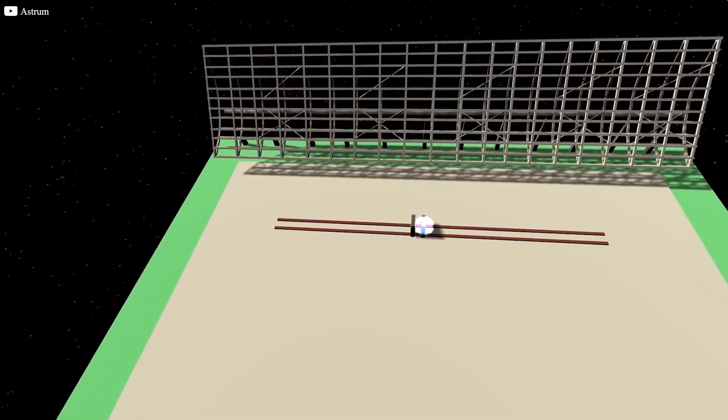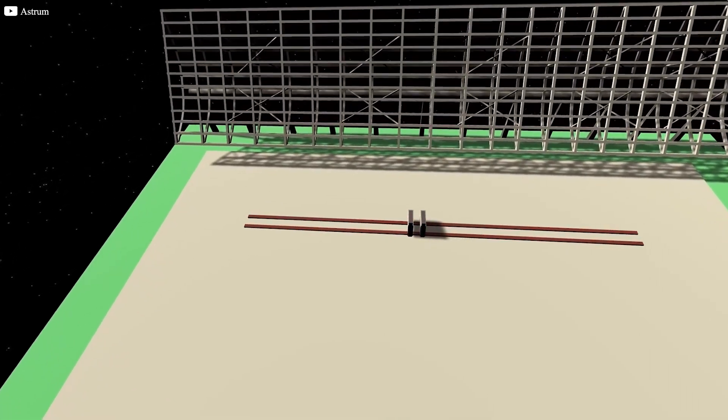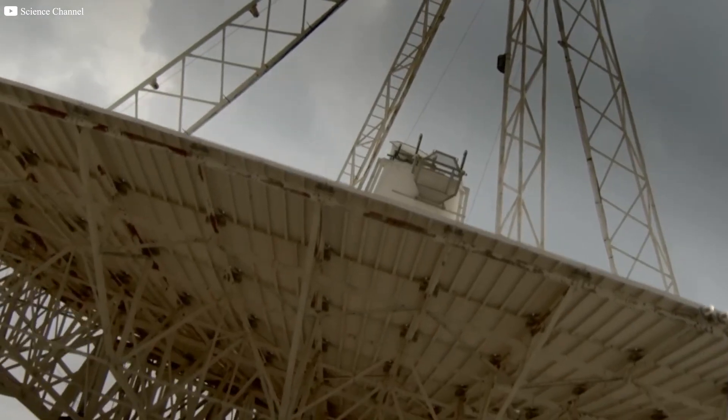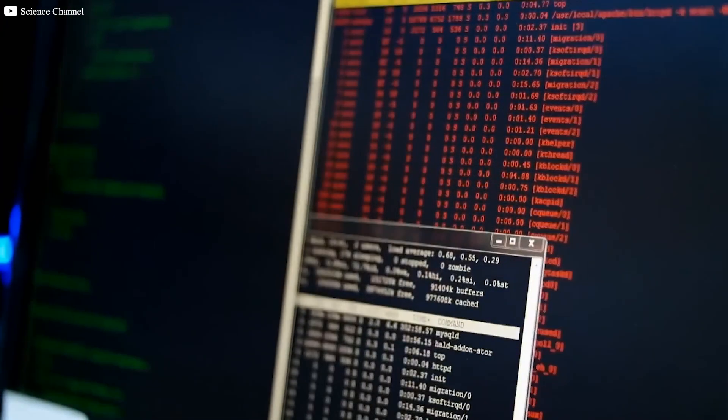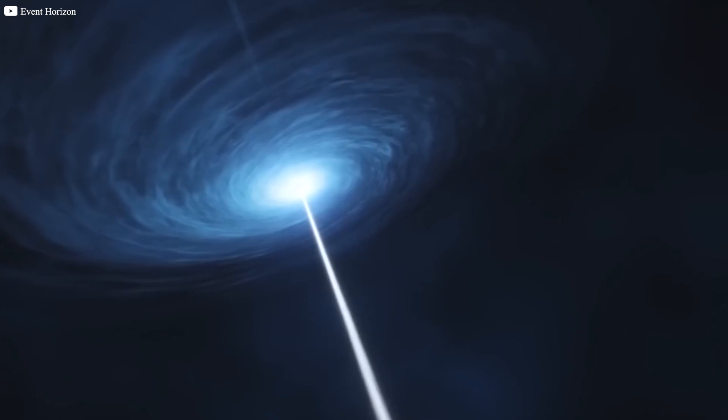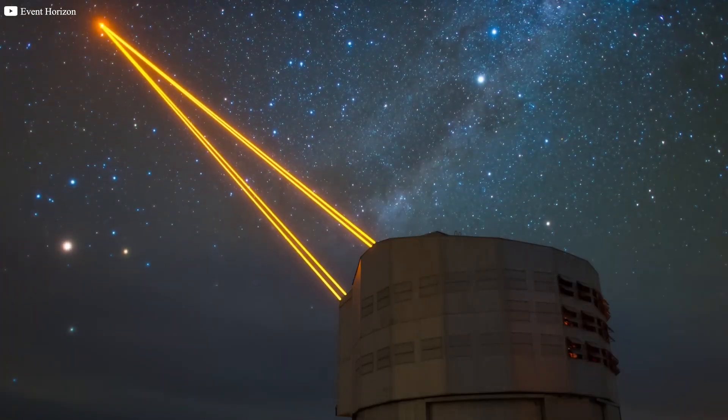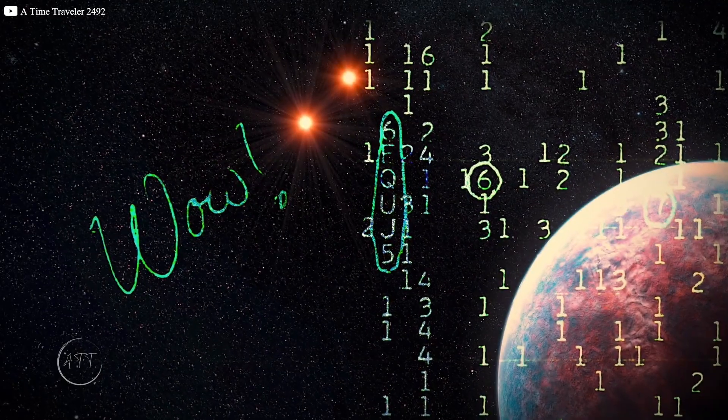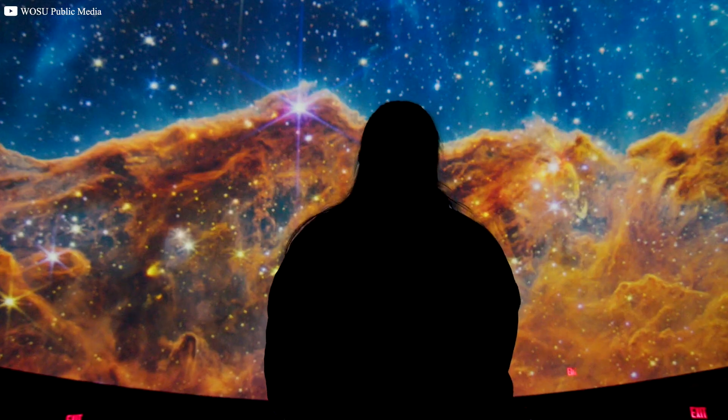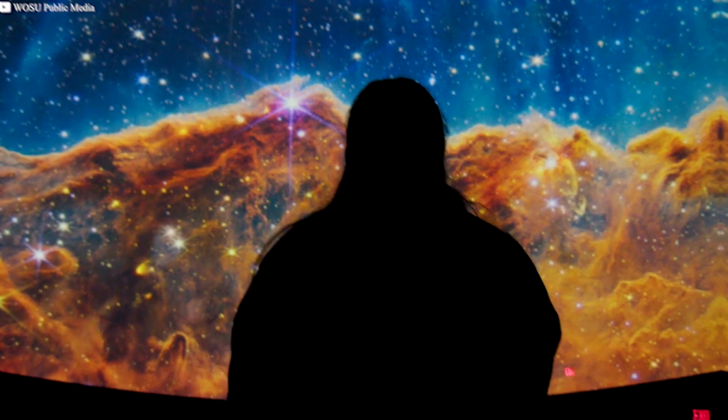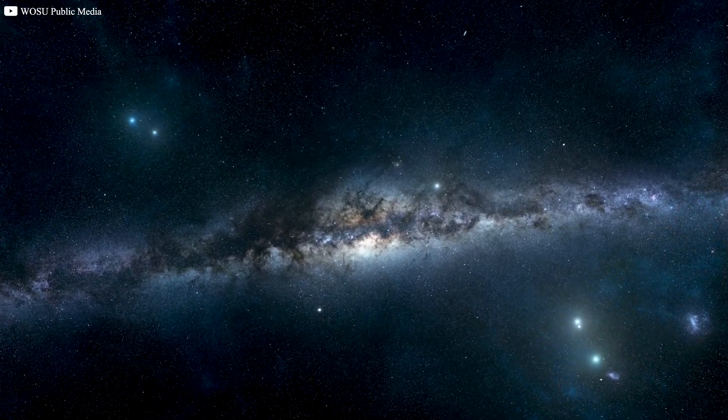Yet after that one fleeting moment, the signal disappeared. Big Ear's team pointed the telescope back to the same spot repeatedly in the following days, but nothing. Silence. The wow signal had come and just as quickly, it had vanished. While this alone wasn't proof of extraterrestrial life, it was enough to ignite a firestorm of speculation. The wow signal had captured the imagination of scientists, enthusiasts, and even the public. But why hadn't it returned? What was its source?